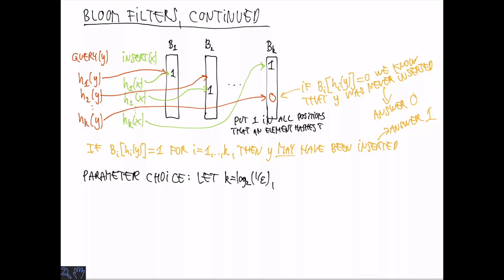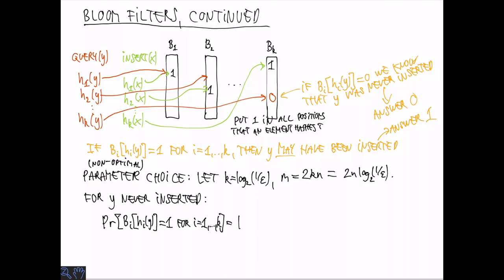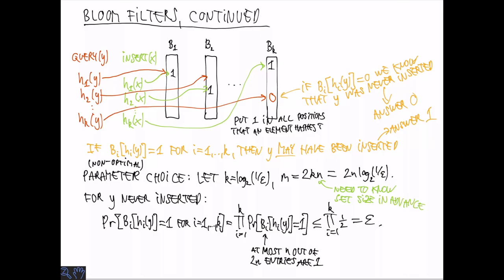One parameter choice that works, it's not the best one but it's close to optimal, is to let k be the logarithm base 2 of 1 over epsilon and m equal to 2kn which is 2n log 1 over epsilon. Why does this work? We need to analyze the false positive probability. Suppose that y was never inserted. What's the probability that we actually have a value of 1 for every i in position h i of y in bit vector bi? By independence this is just a product of these probabilities. In each table we know that there are at most n entries out of the 2n entries that are 1. So each of these probabilities is bounded by one half and the product is bounded by epsilon. One thing to note here is that in order to set the parameter m we need to know n or at least a bound on n in advance.